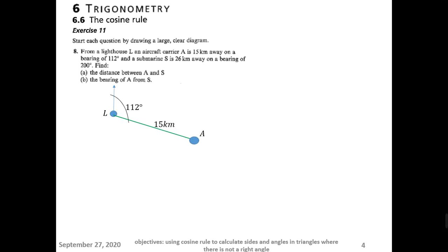Since the question started from the lighthouse, all bearings are going to be measured from the lighthouse. A submarine is 26 kilometers away from the lighthouse on a bearing of 200 degrees. So we measure from the north clockwise 200 degrees.